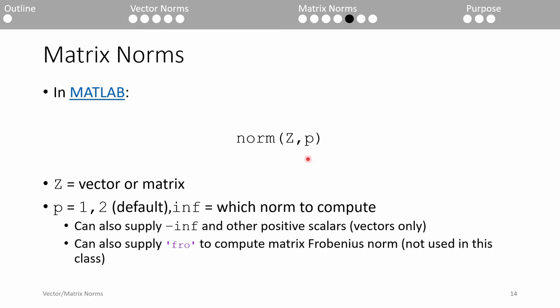P usually takes on the three values seen in this slideshow, 1, 2, or infinity. If Z is a vector, you can also supply negative infinity, which does the same thing as the infinity norm, but picks the smallest magnitude element in the vector instead of the largest magnitude element. You can also technically supply any positive scalar for P, but that's only used in very rare applications.